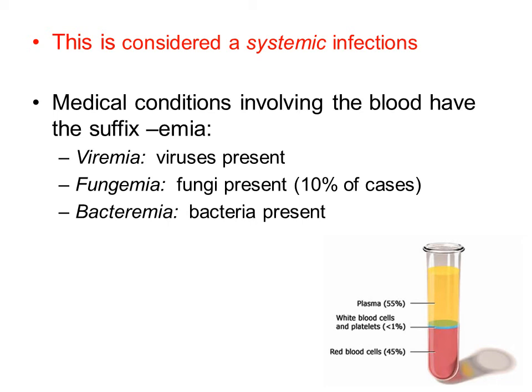If you have a microbe that is in the bloodstream, whatever the microbe is, you're going to put a suffix on the end of it. For example, if you have a virus in the bloodstream, you have viremia — the presence of viruses. If you have fungemia, you have the presence of fungus, and if you have bacteremia, you have the presence of bacteria.